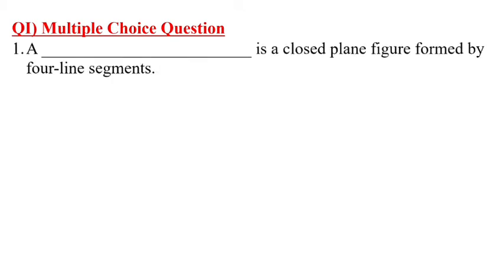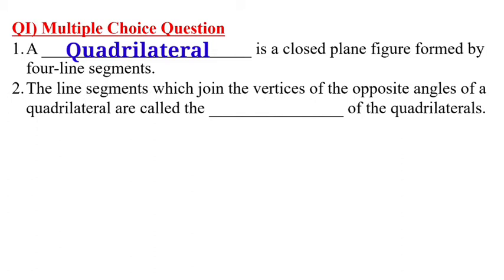The first one is given: a dash is a closed plane figure formed by four line segments. A closed figure formed by four line segments is a quadrilateral. The line segments which join the vertices of the opposite angles of a quadrilateral are called the dash of the quadrilaterals. The answer is diagonals.